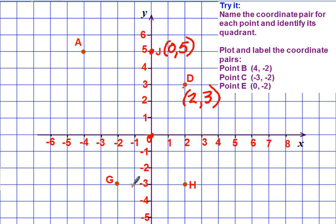Let's do G. Again, start at zero. One, two. So a negative two. And then down three. One, two, three. So negative two, comma, negative three.